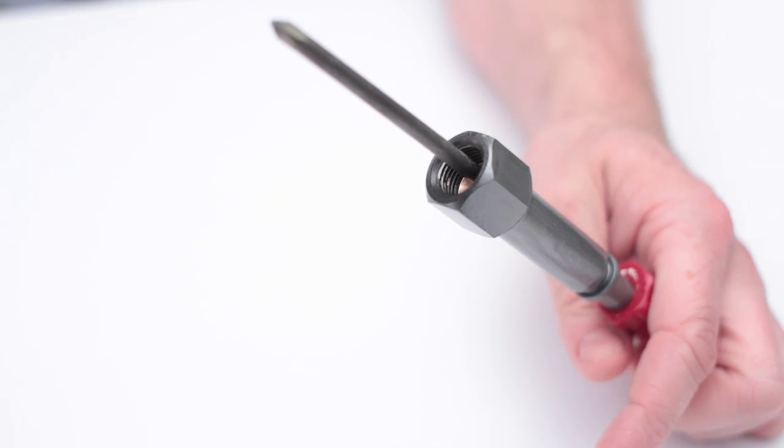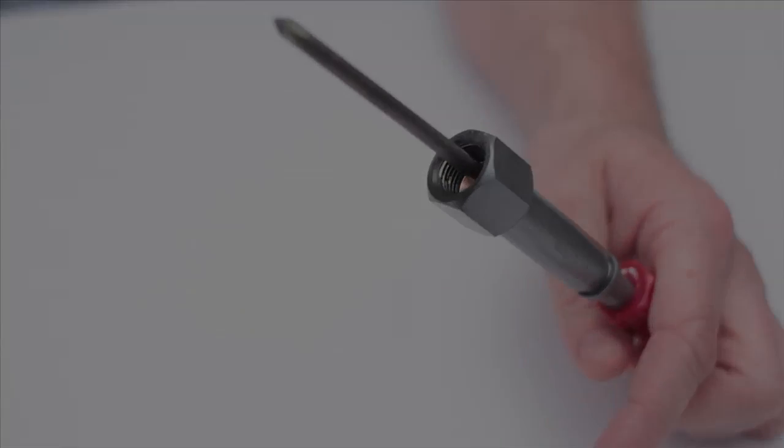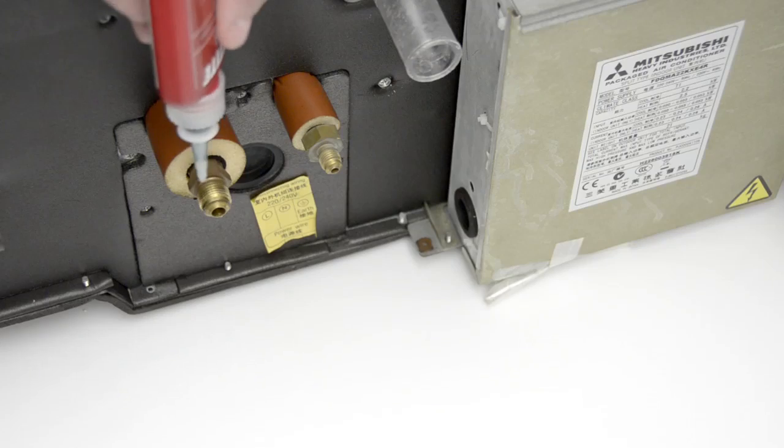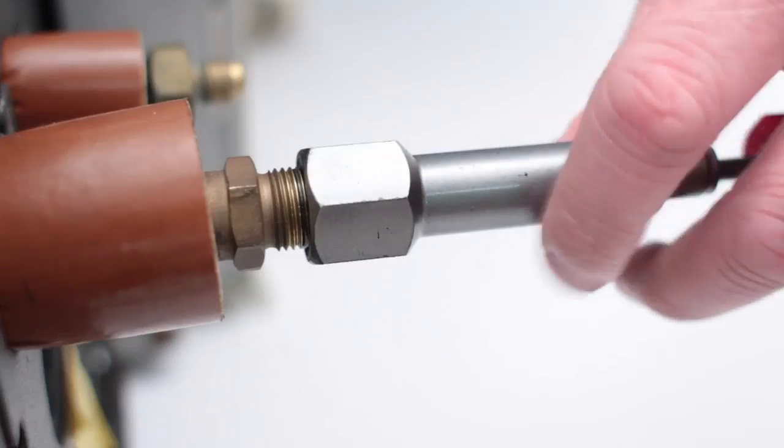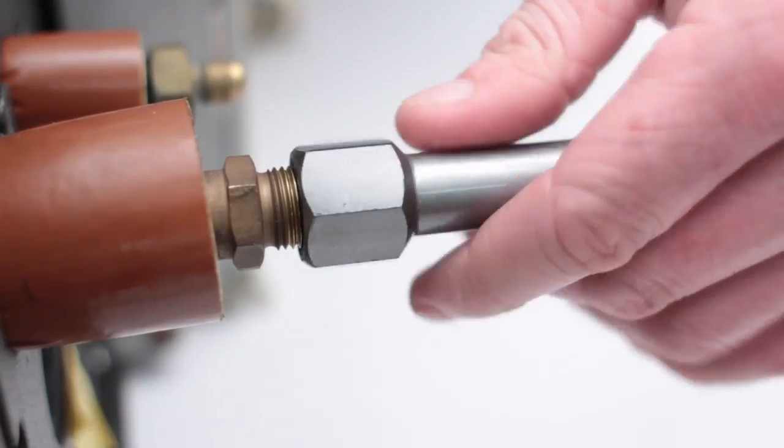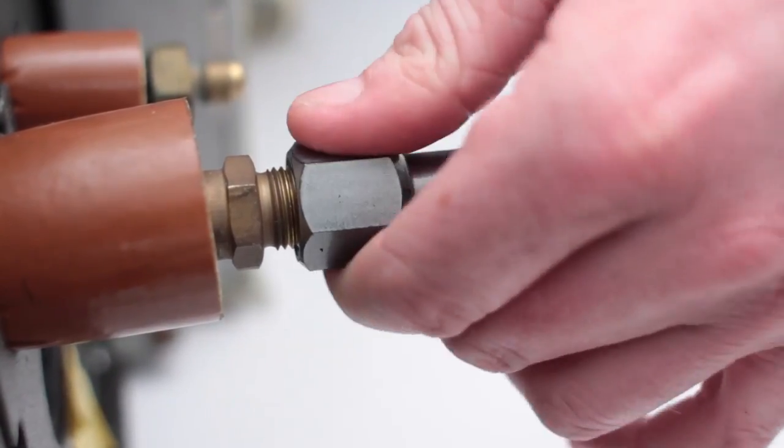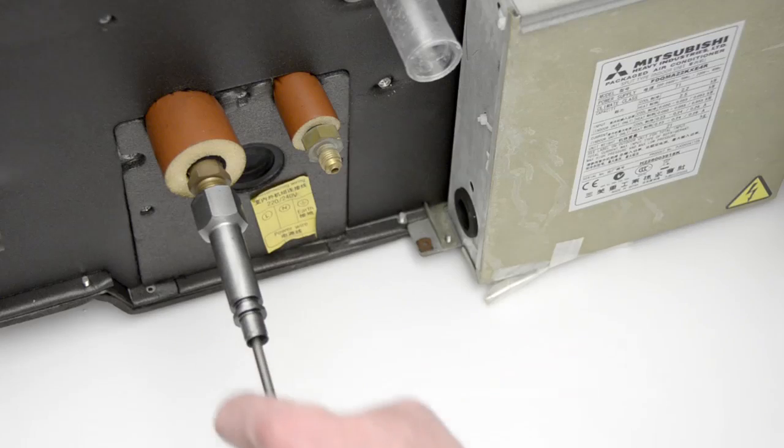Prepare the fan coil connection by applying lock preparation fluid. Insert the screwdriver tip into the fan coil connection and screw the body onto the fan coil connection until finger tight. Remove the screwdriver.